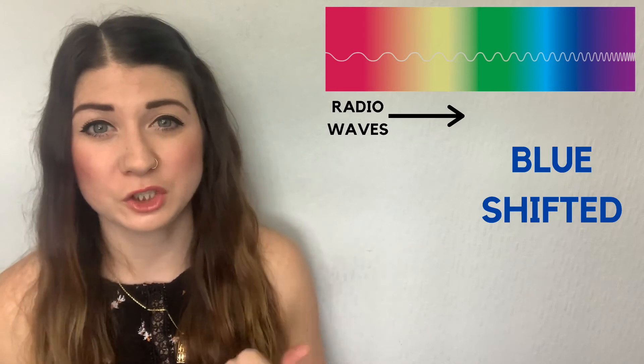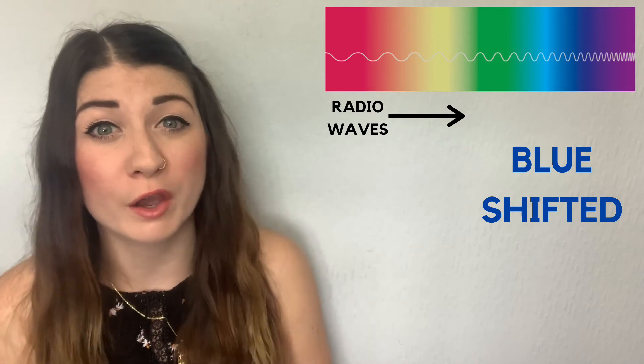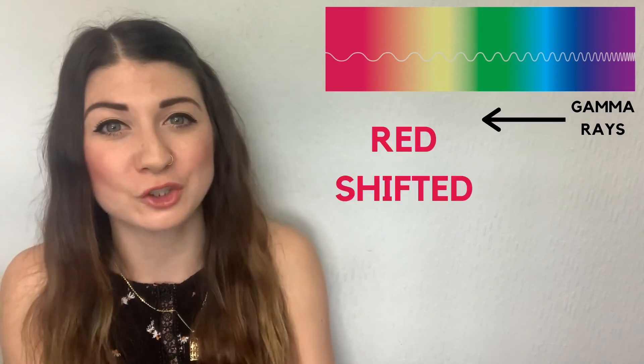These terms aren't just used for the visible light spectrum — they can be used across the whole electromagnetic spectrum. So if radio waves are shifted towards the ultraviolet part of the spectrum then they will be blueshifted, because they're shifting towards the higher frequencies. And if gamma rays are shifted towards the lower-frequency radio waves end of the spectrum, then they are said to be redshifted.